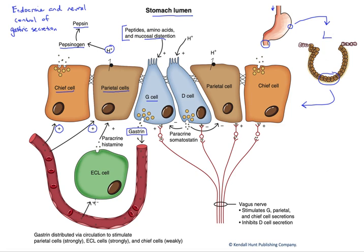In addition, gastrin stimulates another cell type called an enterochromaffin-like cell, which releases histamine. Histamine acts in a paracrine fashion — not through the bloodstream, but adjacent through the interstitium to neighboring cells — and it is highly stimulatory to the parietal cells. This is actually the primary stimulus for parietal cell acid secretion; it's the indirect action of gastrin. This leads us to understand why many antacid drugs work by opposing gastric histamine production.